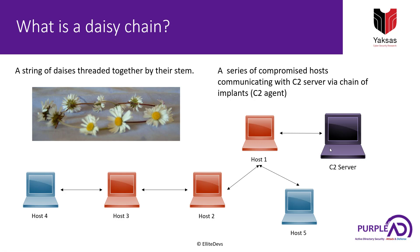This has certain advantages which I will talk about shortly. Alternatively, if we want to keep only one daisy server in our target environment, we can have all other implants report to it. For example, if we compromise host five and don't want to establish a daisy server on it, we can let it report to the host one daisy server, and our C2 server will communicate with host five through host one.